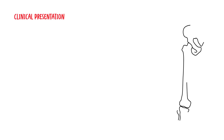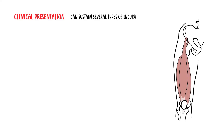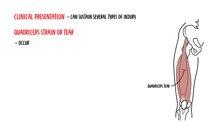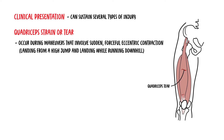The quadriceps muscles and tendons can sustain several types of injury. Here we will look at quadriceps muscle strain and quadriceps muscle contusion. A quadriceps strain is a tear in one or more of the quadriceps muscles. It occurs most frequently during manoeuvres that involve sudden, forceful, eccentric contraction — examples include landing from a high jump or landing while running downhill.